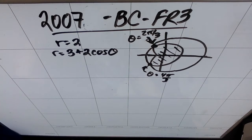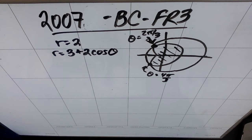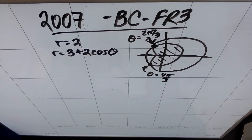This is 2007 BC free response three. We're back at the free response. This is a calculator question because in 2007, you could use a calculator on free responses one, two, and three. We're given R equals two and R equals three plus two cosine theta, both shown in this diagram. The curves intersect at theta equals two pi over three and four pi over three — we're given that information.